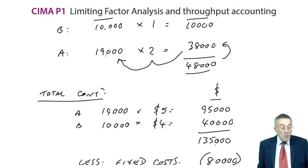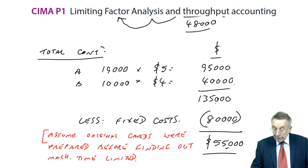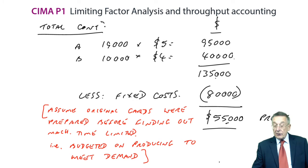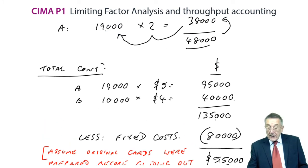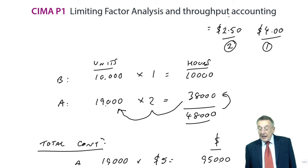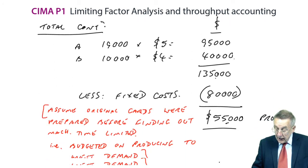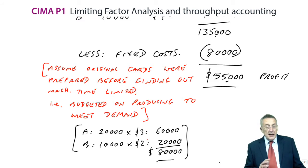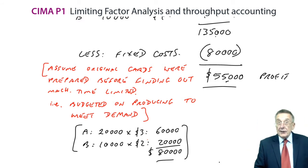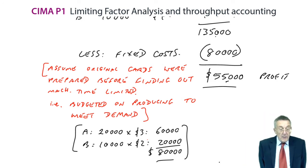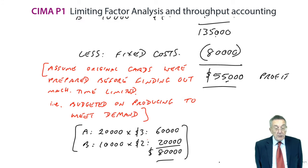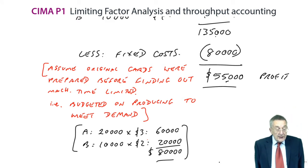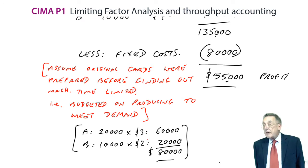Let's go on with the limiting factor analysis. If you remember, we've done exercise one, where we used conventional limiting factor analysis, and we decided that we should make 19,000 of A, 10,000 of B, and the maximum profit we could generate was $55,000. We're now going to take exactly the same example, but this time we're going to use a throughput accounting approach.